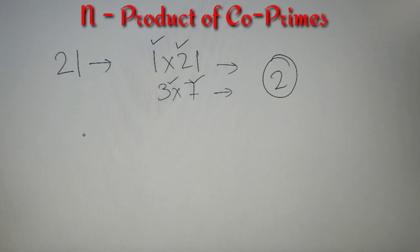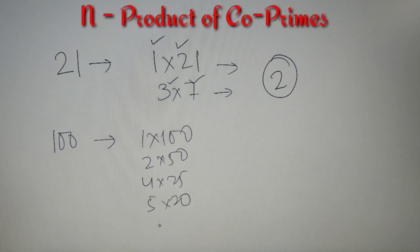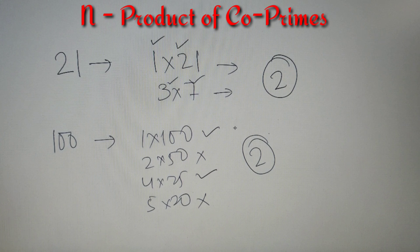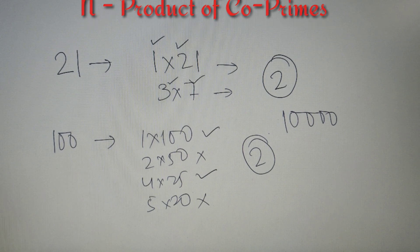Let's take another example with the number 100. Now 100 can be written as 1×100, 2×50, 4×25, and 5×20 — after this the numbers start repeating. Checking co-prime pairs: 1 and 100 are a co-prime pair, 2 and 50 are not, 4 and 25 are a co-prime pair, and 5 and 20 are not. So there are two co-prime pairs for 100 as well. These basic examples can be solved manually, but for a large number like 10,000 this becomes very time-consuming, so let's discuss a quicker and more effective method.